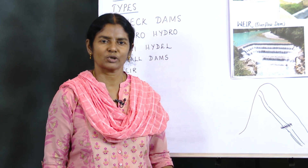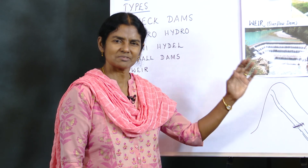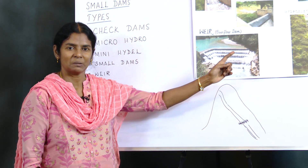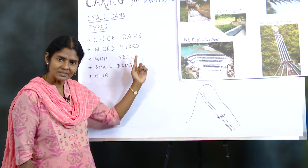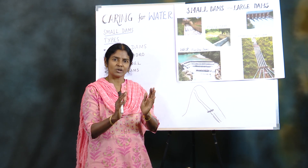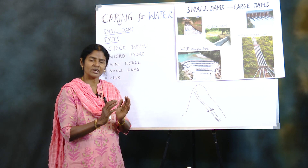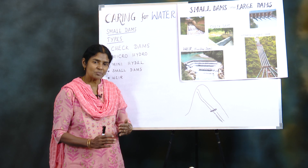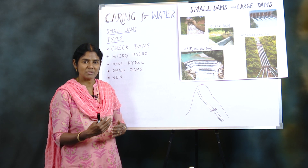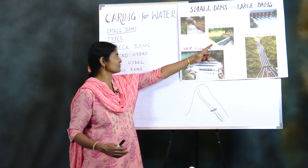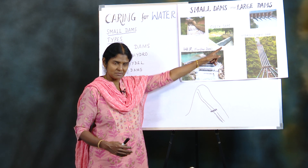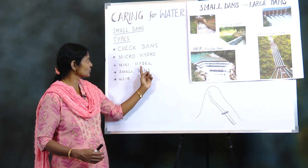Having seen rainwater harvesting and different methods of conserving water, we still have a small part on how water can be conserved through small dams as well as large dams. Let us first see the types of small dams. We have check dams - here is a picture of a check dam. They are very small, constructed in a small area where there is a flow of water, stopping it to reduce water speed and soil erosion. A check dam is man-made and built of concrete or sometimes sandbags.